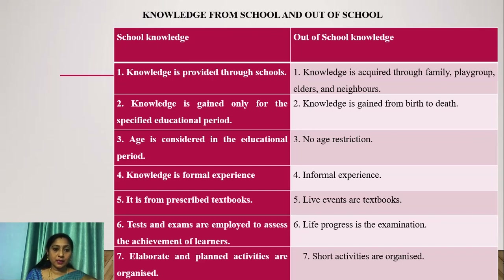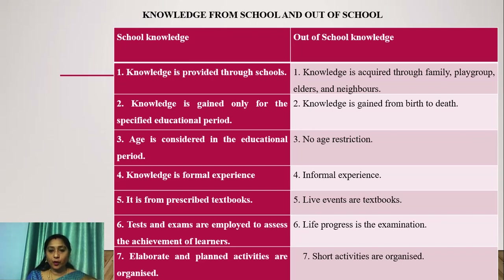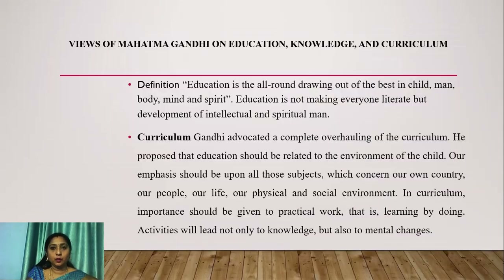In school knowledge, tests and exams are employed to assess the achievement of learners, and elaborate and planned activities are organized. Whereas in out-of-school knowledge, knowledge is acquired through family, play groups, elders and neighbors. Knowledge is gained from birth to death with no age restriction. The experience is informal, live events are the textbooks, live progress is the examination, and short activities are engaged in out-of-school knowledge.